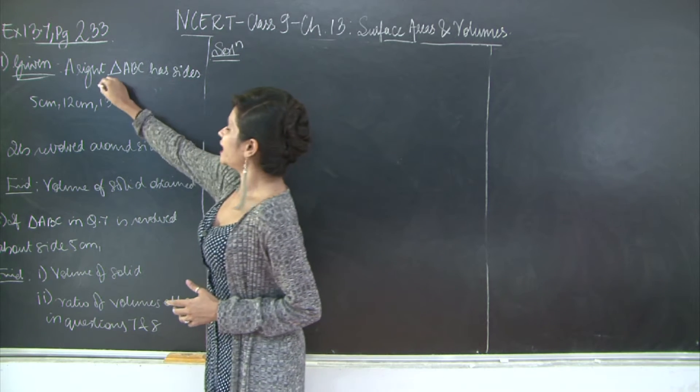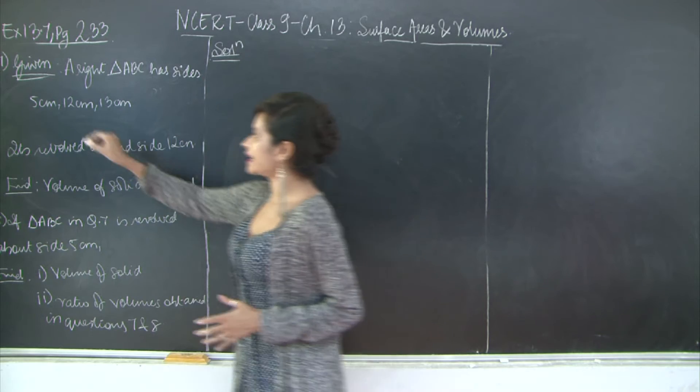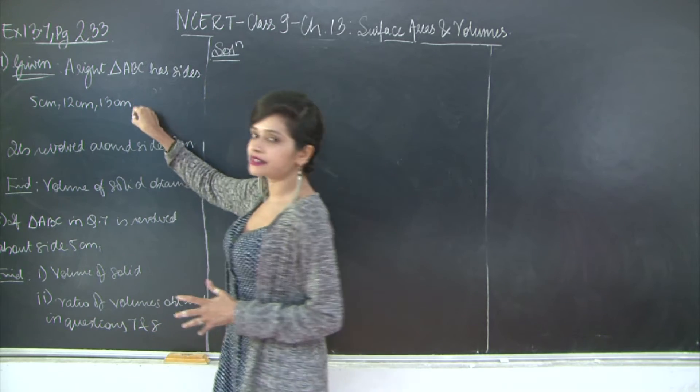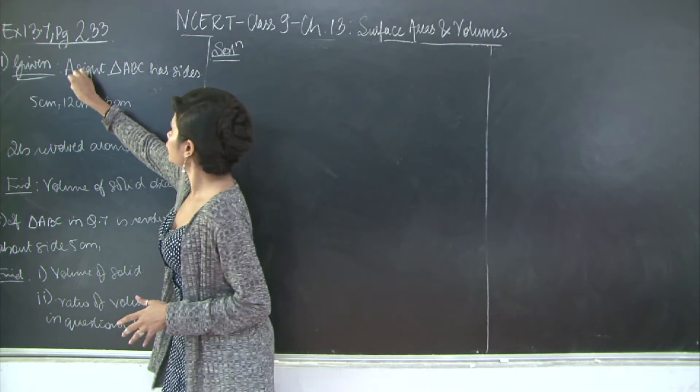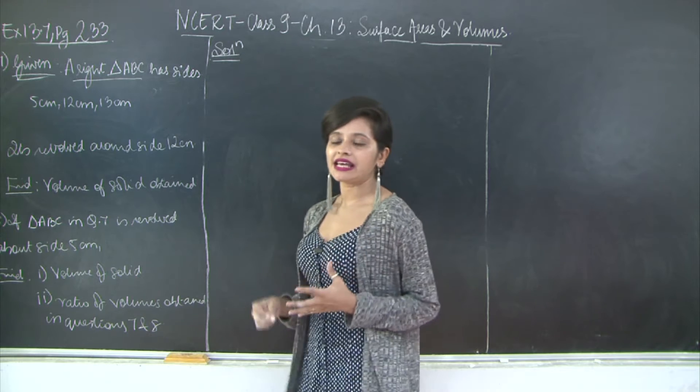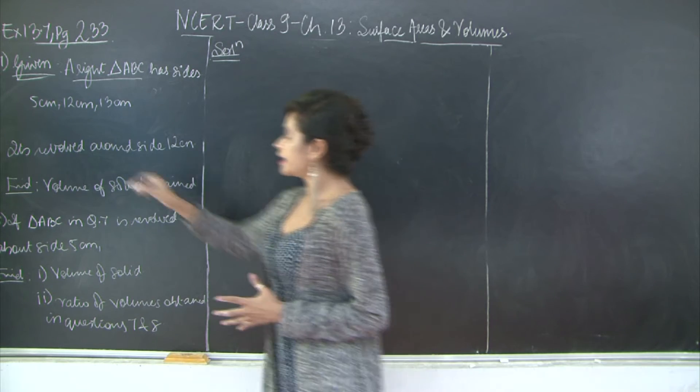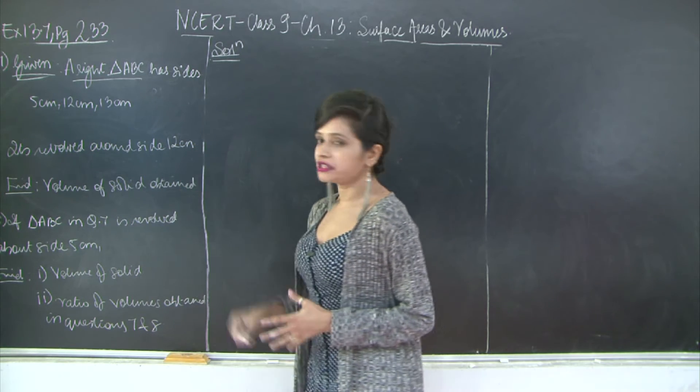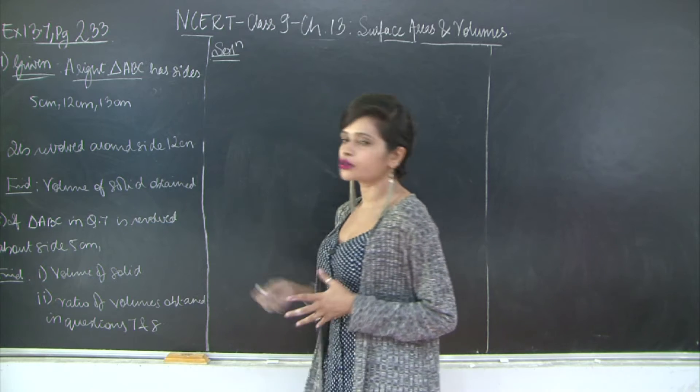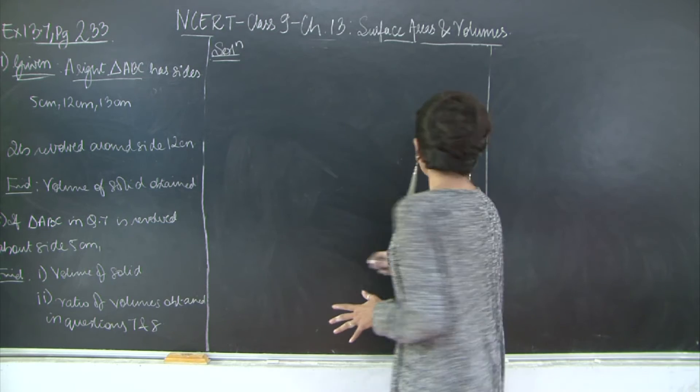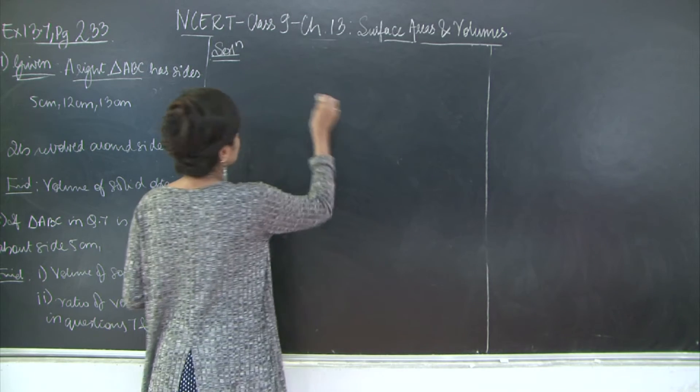First we have a right triangle ABC which has sides 5cm, 12cm and 13cm. So here it's a right angled triangle ABC. Now it's revolved around the side 12cm. We need to find the volume of the solid obtained. So first of all let's draw our right triangle ABC.